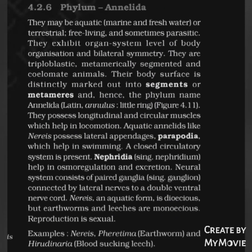Phylum Annelida: They may be aquatic (marine or freshwater), terrestrial, free-living, or sometimes parasitic. They exhibit organ system level of organization and bilateral symmetry. They are triploblastic, metamerically segmented, and coelomate. The body surface is distinctly marked into segments or metameres, hence the name Annelida (Latin: annulus = little ring). They possess longitudinal and circular muscles for locomotion. Aquatic annelids like Nereis possess lateral appendages called parapodia for swimming. A closed circulatory system is present. Nephridia help in osmoregulation and excretion. Neural system consists of paired ganglia connected by lateral nerves to a double ventral nerve cord. Nereis is dioecious but earthworms and leeches are monoecious. Examples: Nereis, Pheretima (earthworm), and Hirudinaria (blood-sucking leech).